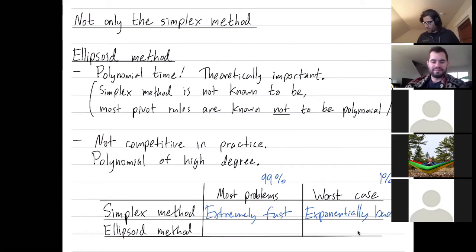The ellipsoid method, by comparison, in the worst case, it's high degree polynomial. I actually don't know the degree. I'd be interested if any of you do. Which is better than exponentially bad, but it's still high degree polynomial.